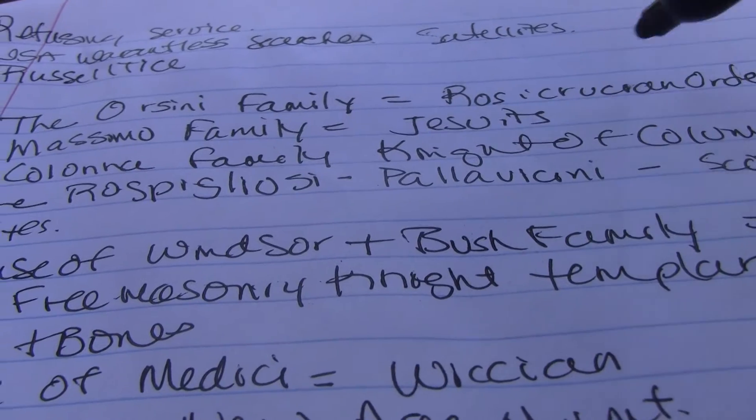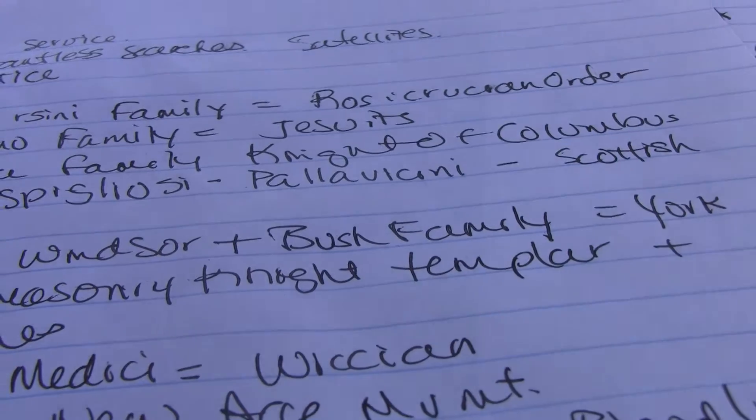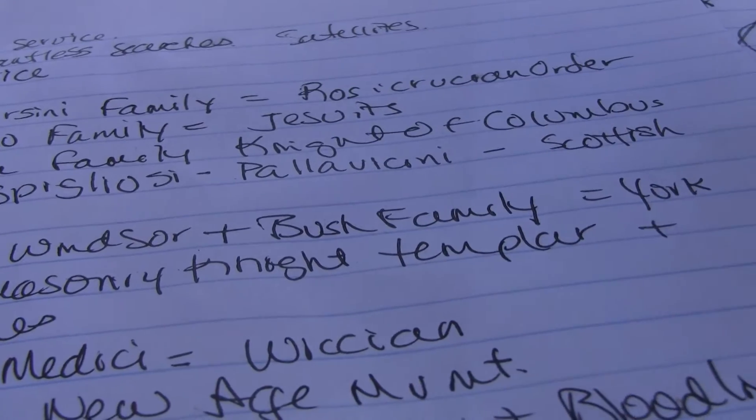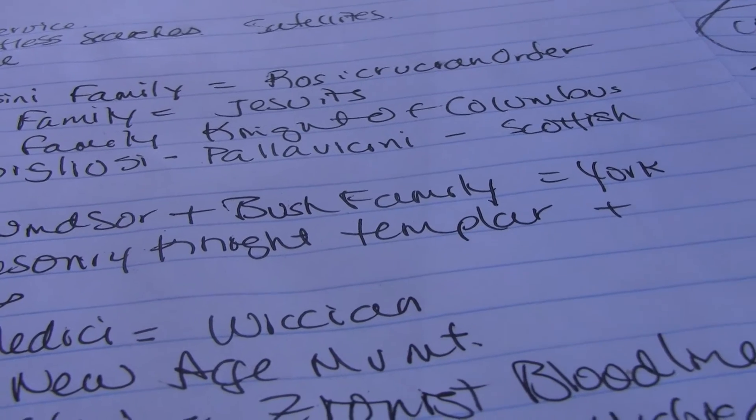The Rosicrucian Order. And even they become like the cops have a fraternal order of police. So that's a secret society in a way.